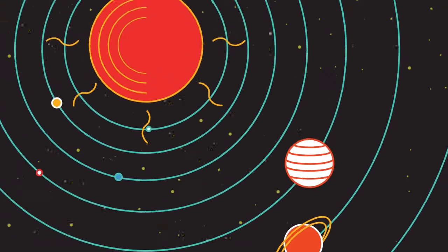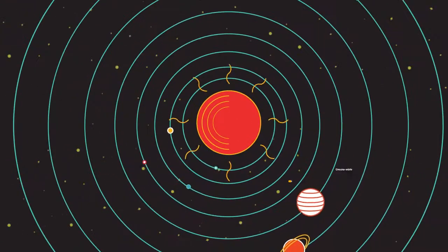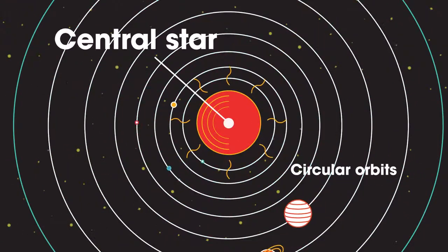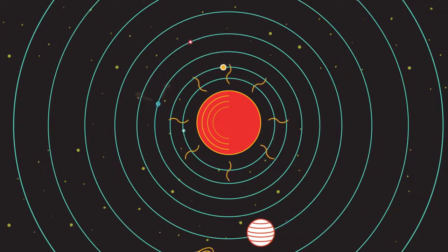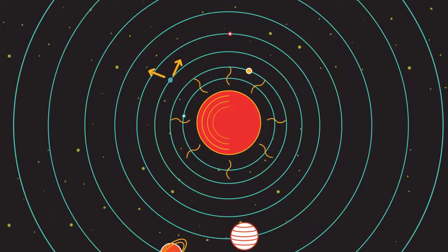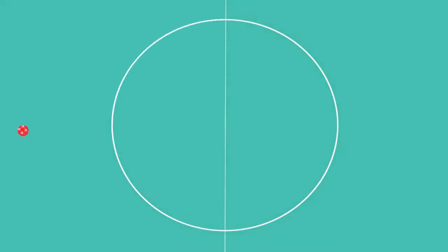So what does speed and velocity have to do with planets? Most planets have nearly circular orbits around a star, so the planet's speed will remain constant, but because the direction changes, so does the velocity.